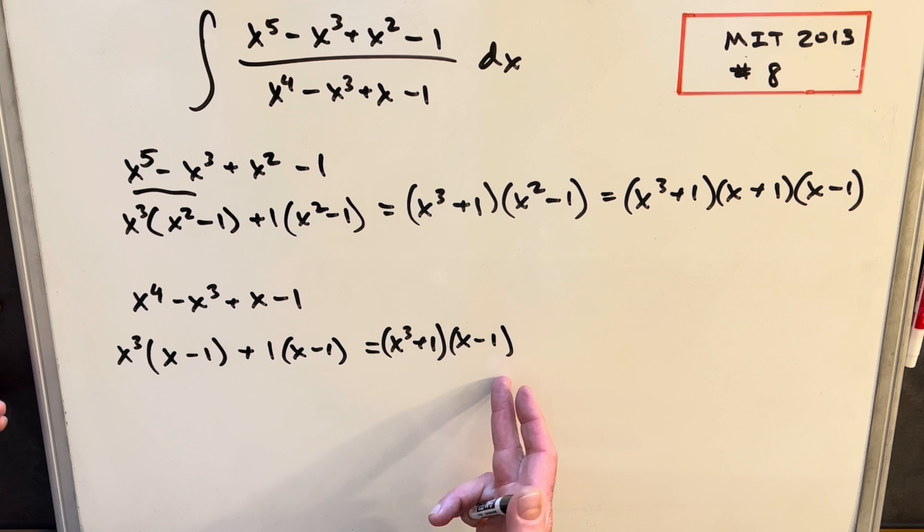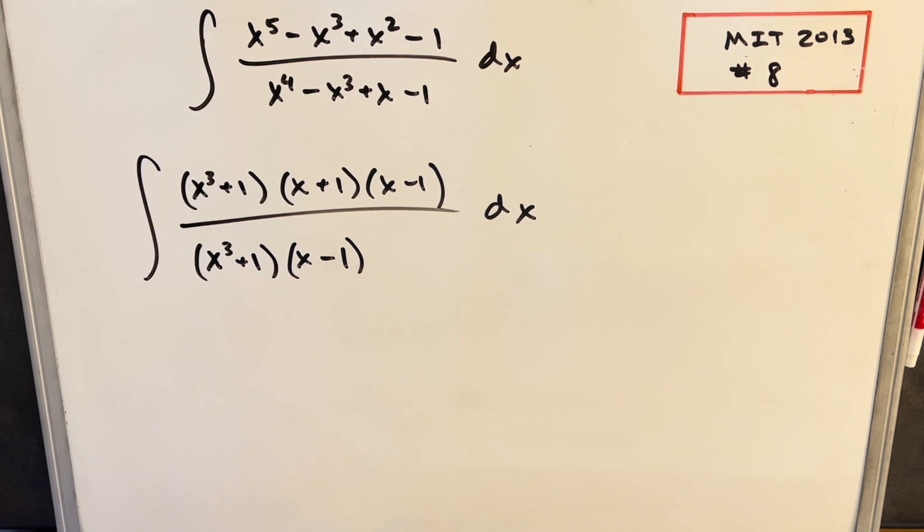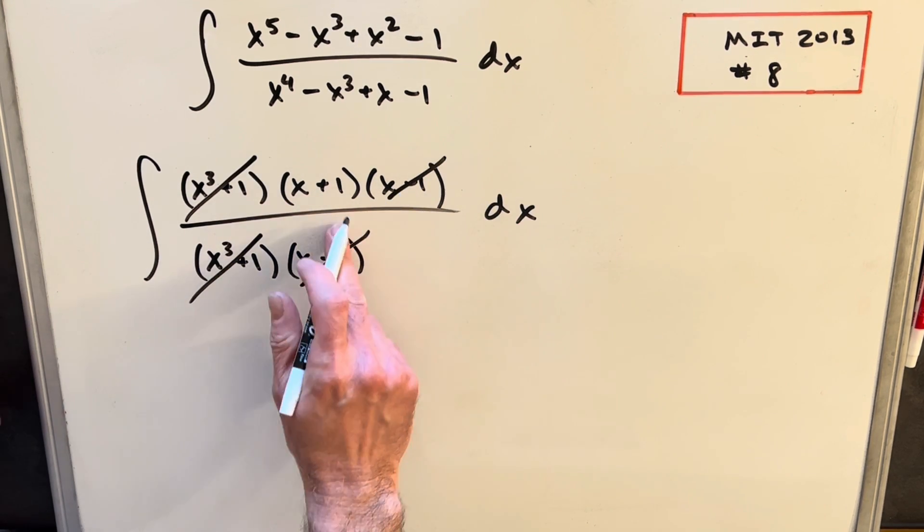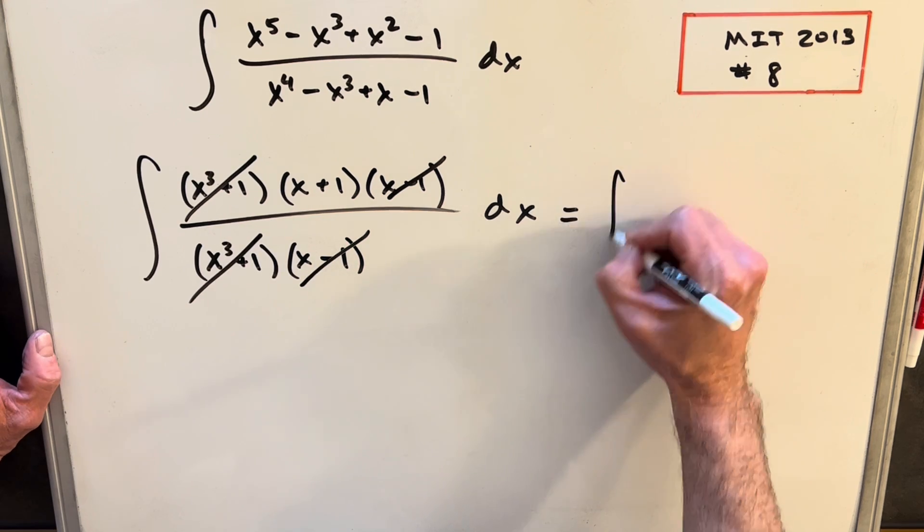From here, let's just put this back in the integral and see what kind of cancellation we get. Now I think we can see that our factoring is really going to pay off. We're going to be able to cancel here and here, and then we can cancel here and here, and we're just left integrating (x + 1).